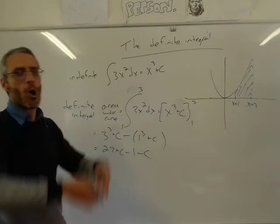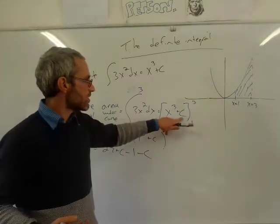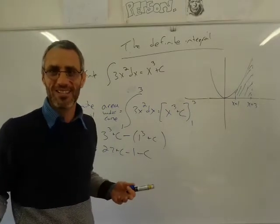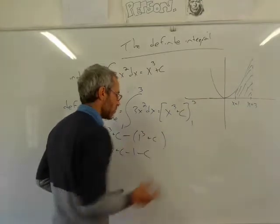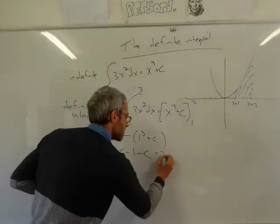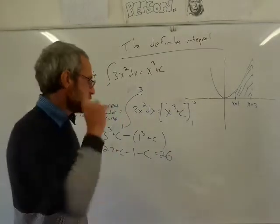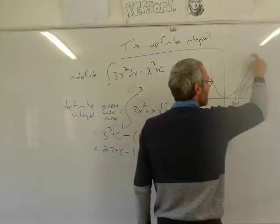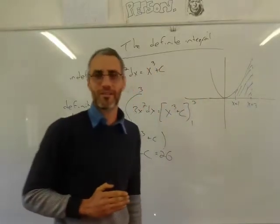The constant always evaporates. Why? Because the constant doesn't depend on x — whatever numbers you get from the x, the c remains a c and it always cancels out. In this case the answer is 26. That 26 is the area under the curve between the two vertical lines x equals 1 and x equals 3.